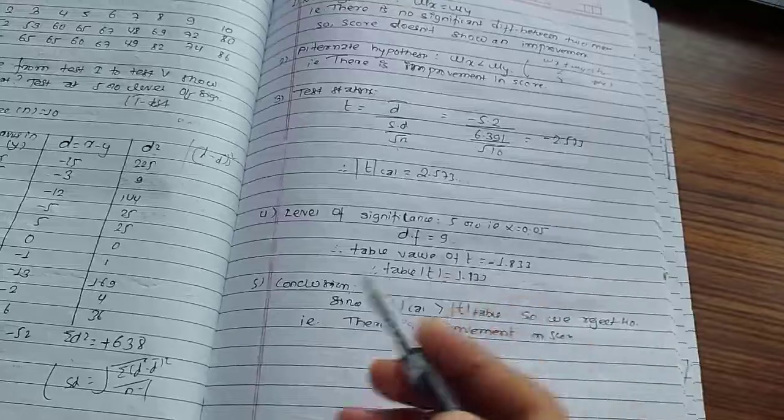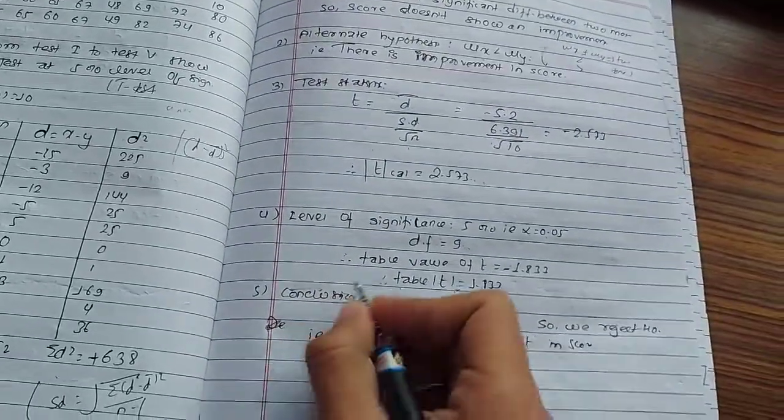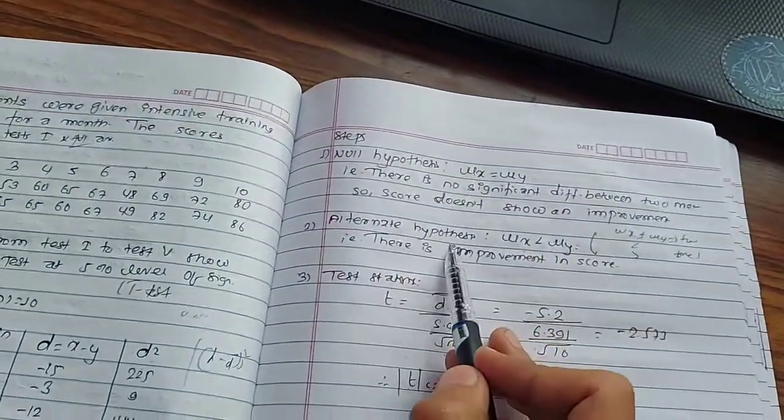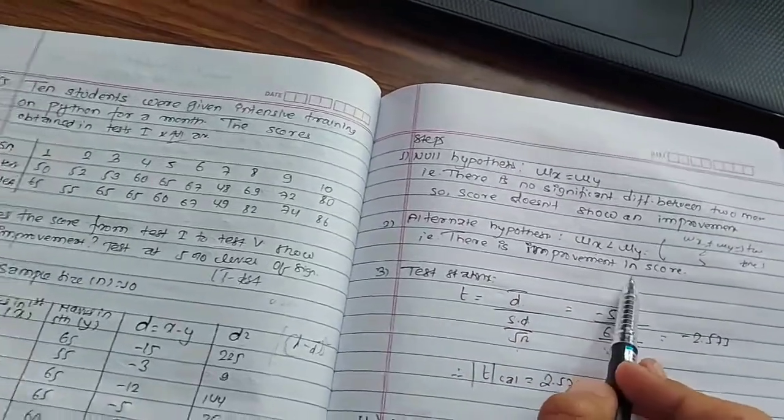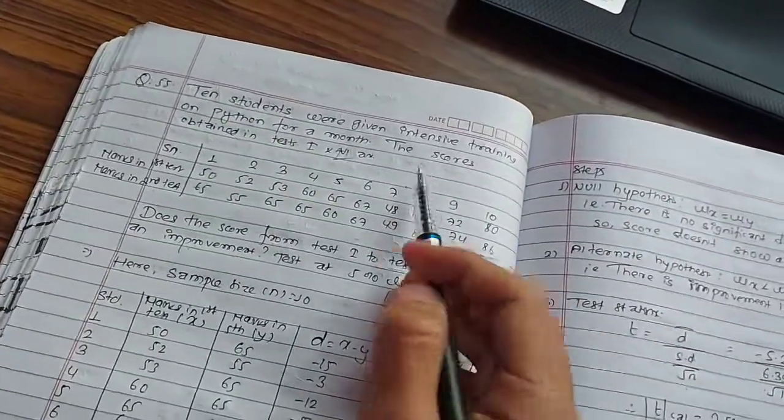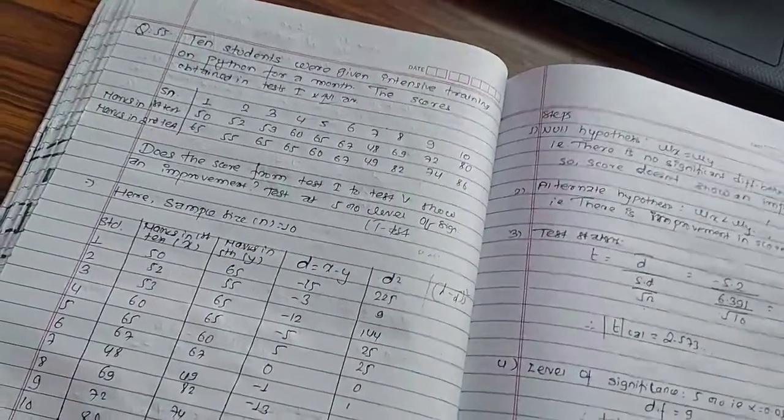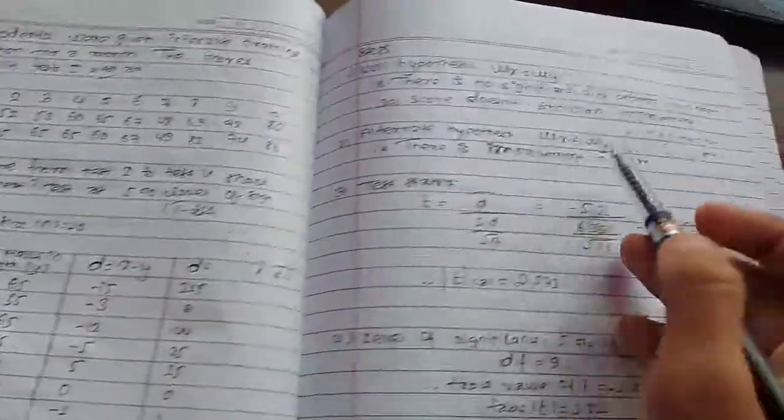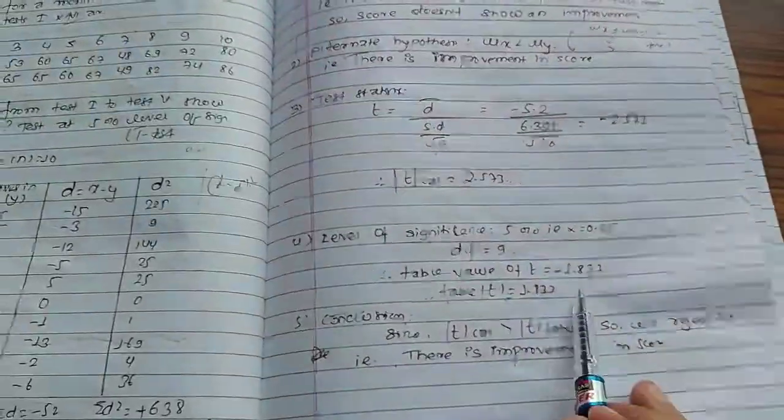So we reject null hypothesis. Alternate hypothesis is true. There is improvement in the score. The Python training program is successful. Is there any difference between the two test scores? Thank you.